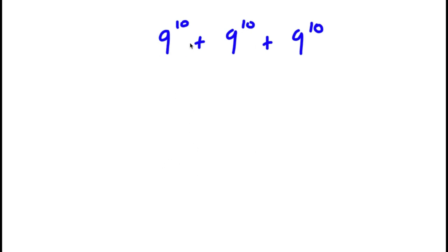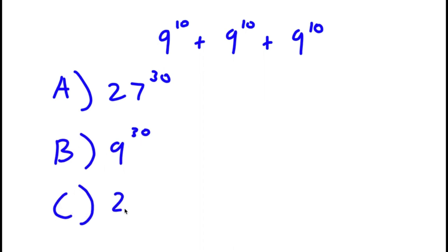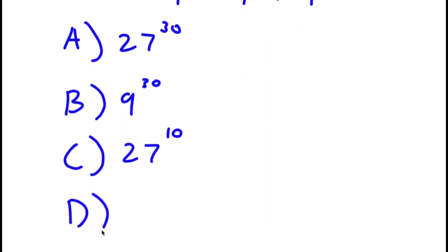In this problem, I have 9 to the power of 10 plus 9 to the power of 10 plus 9 to the power of 10. I have four answer choices: A is 27 to the power of 30, B is 9 to the power of 30, C is 27 to the power of 10, and D is 3 to the power of 21.